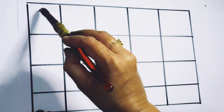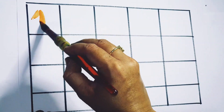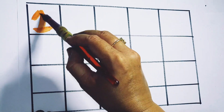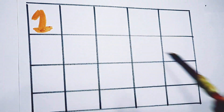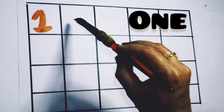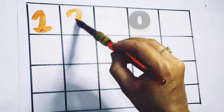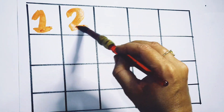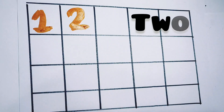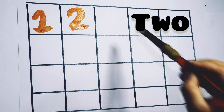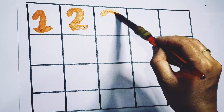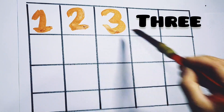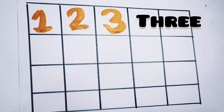Orange color. 1 — O, N, E — 1. 2 — T, W, O — 2. 3 — T, H, R, E, E — 3.